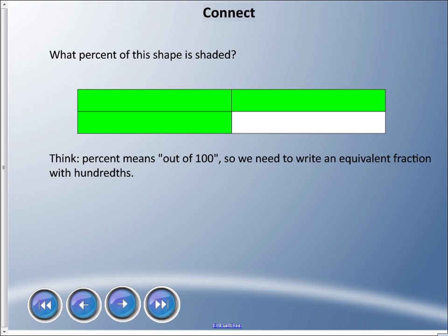What percent of this shape is shaded? Remember that percent means out of 100, so we need to write an equivalent fraction with hundreds. You might say three quarters—there's four equal pieces, three are shaded green. But we're trying to get a percent, and percent is out of 100, so we need to change that to 100. The only way we can do that is multiply by 25.